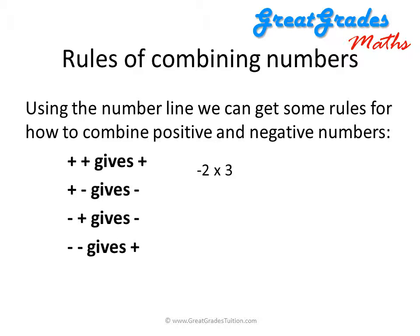Let's use these rules to perform a calculation: minus two times three. First of all, we have to find out which rule we need to use. Here we have a negative number and a positive number, so we need to use the third rule, which tells us that by combining these two numbers together the answer will be negative overall. So we can do the calculation two times three, which gives us six, and the answer will be negative. So our answer will be minus six.